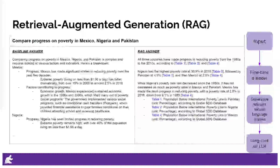Retrieval Augmented Generation pipelines consist of several key components designed to enhance the interaction between user queries and data retrieval systems. Initially, a user query is processed by a fine-tuned language model, which generates relevant natural language queries tailored for data commons. These queries are then executed against the data commons natural language interface to retrieve pertinent tables. The next step involves prompting a long-context LLM, specifically Gemini 1.5 Pro, with both the original user query and the retrieved data. Given the potential length of the input, averaging 38,000 tokens and reaching up to 348,000 tokens for broad comparison queries, utilizing a long-context LLM is crucial for effective processing.